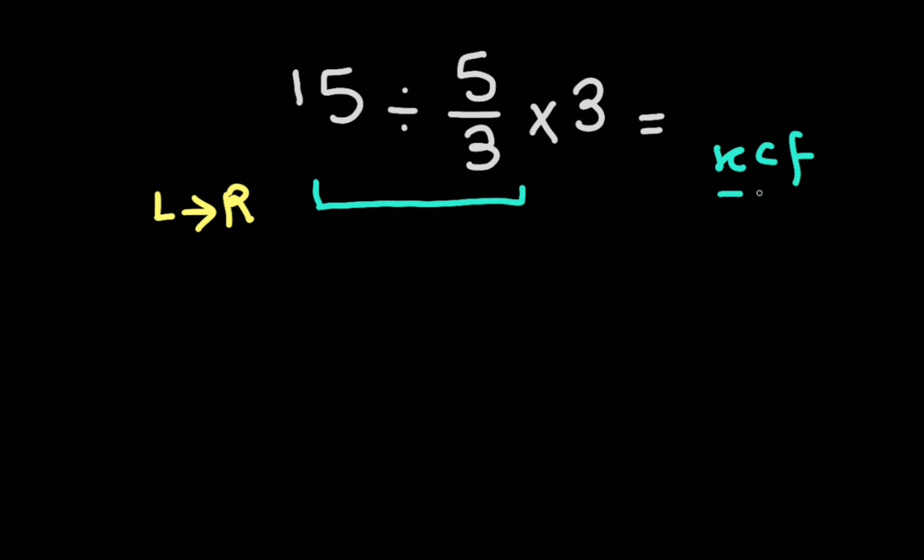That is, keep first fraction, change division to multiplication, and flip the next fraction. So we have here 15 over 1, keep first fraction, change division to multiplication, and flip the next fraction, so 5 over 3 becomes 3 over 5.